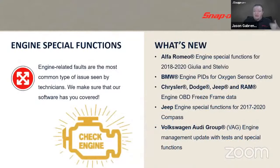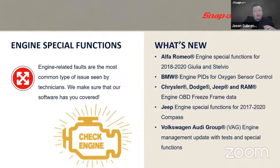Engine special functions are where we spend a lot of time with scan tools, and having bi-directional controls, functional tests, and scripted tests available makes life easier. Highlights include: Alfa Romeo engine special functions for the Giulia and Stelvio; BMW additional engine PIDs for oxygen sensor control to help with lean and rich conditions; Chrysler/Dodge/Jeep/Ram engine OBD freeze frame data right from the code menu — they call it environmental data; and additional engine special functions for the 2017–2020 Jeep Compass and Volkswagen/Audi Group engine management update tests.